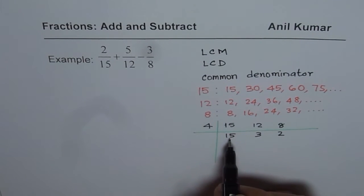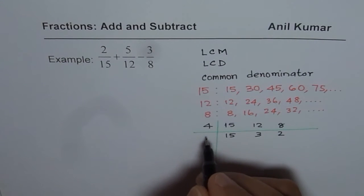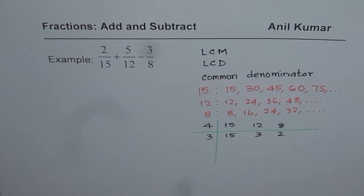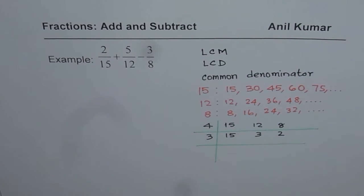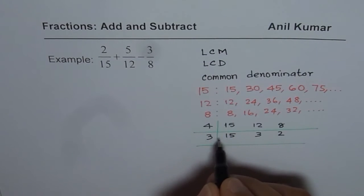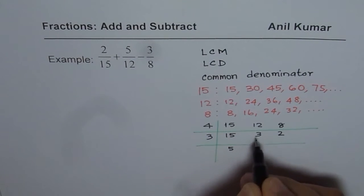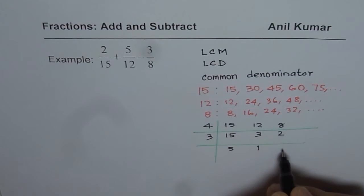Now, here you could divide 15 and 3 by 3 so that means they have a common factor. Finding lowest common multiple is also getting rid of common factors. So 15 divided by 3 is 5, 3 divided by 3 is 1 and we get 2 here.